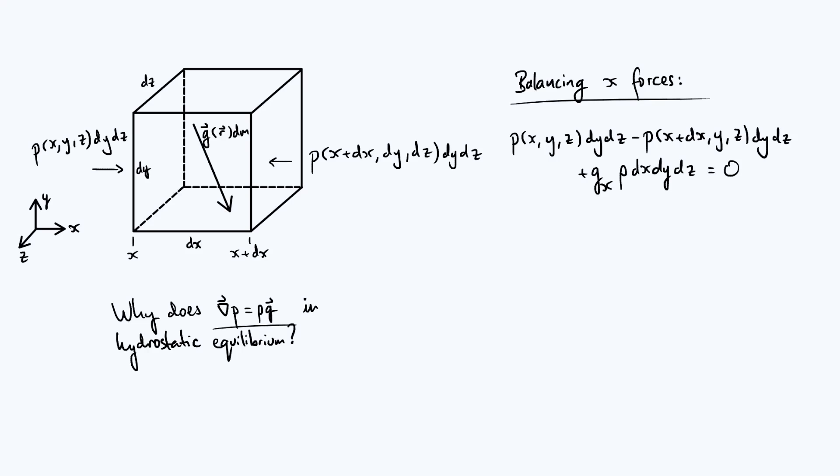This equation would probably look a bit neater if we could make some of those differential terms disappear. A nice way to do that is to divide everything by dx, dy, dz. That will cancel out the dy dz and put dx on the denominator. The same thing is going to happen to the second term. We can write those first two terms as p of x, y, z minus p of x plus dx, y, z, then divide that whole thing by dx, and we're just left with the second term, which is now just plus gx rho. That's all equal to zero.